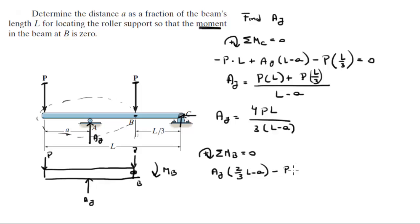minus P times 2/3 L is equal to zero. So what you're going to do is you're going to replace AY by this that we found right here, like this: 4PL all over 3 times (L minus A), times (2/3 L minus A), minus P times 2/3 L is equal to zero.